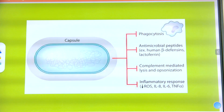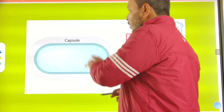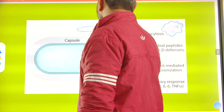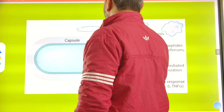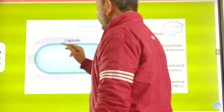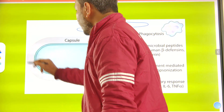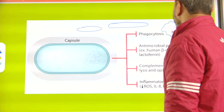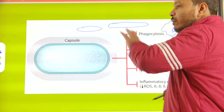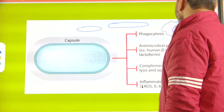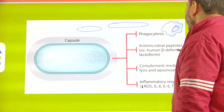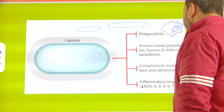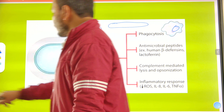The bacteria are plump, short rods surrounded by a polysaccharide capsule. The capsule prevents phagocytosis by protecting against antimicrobial peptides such as human beta-defensins, lactoferrin, complement-mediated lysis, opsonization, and inflammatory response.